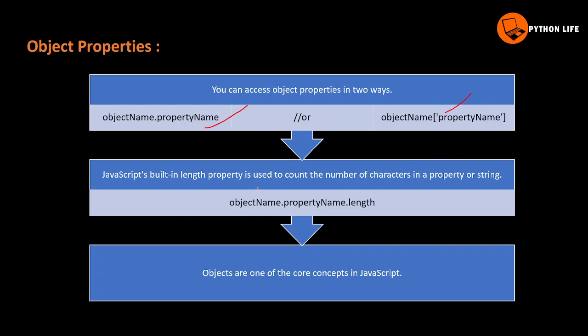So we have two types to access. JavaScript's built-in length property is used to count the number of characters in a property or a string. The syntax is: object name dot property name dot length. Objects are one of the important core concepts in JavaScript.